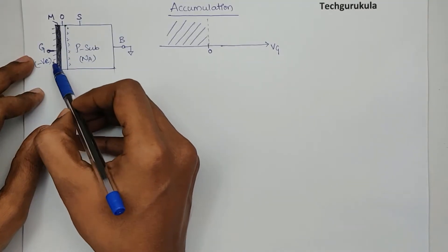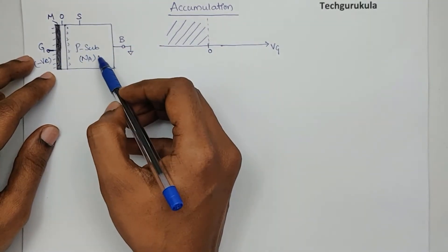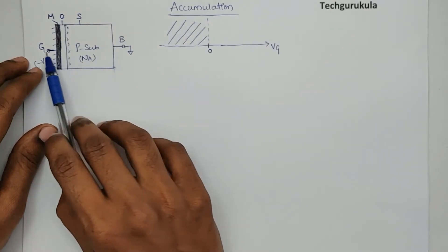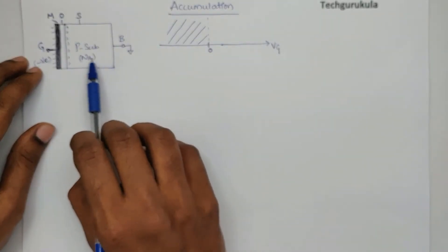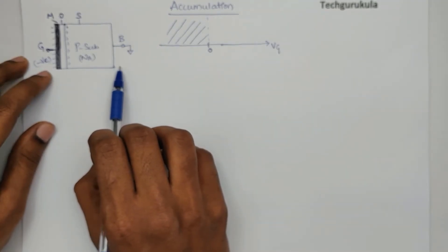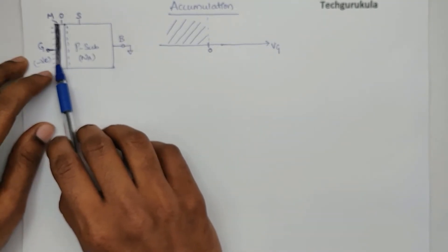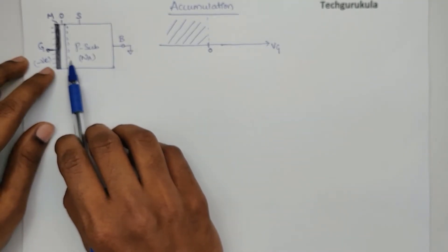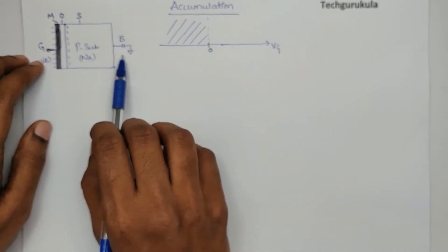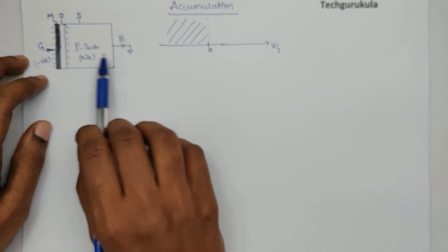This negative charge at the gate should be equal to the positive charge in the semiconductor. Because before we apply the potential difference, this MOS capacitor was charge neutral — that was the ideal MOS cap. And when we apply a potential difference as well, the charge that comes on the gate should be equal and opposite in the semiconductor, so that the total net charge is 0 and it remains in a charge-neutral condition.